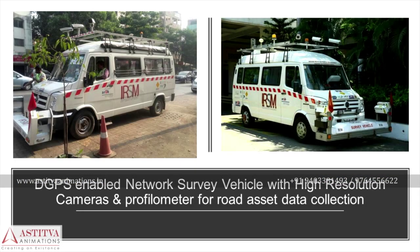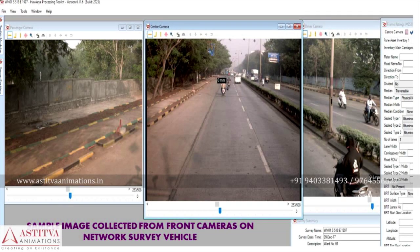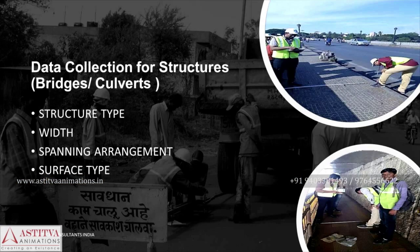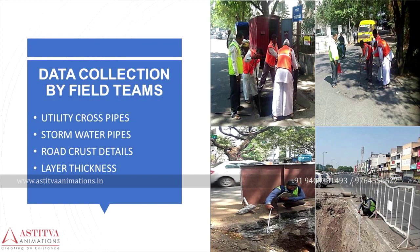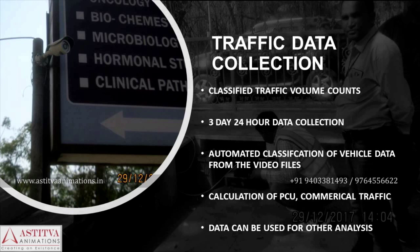A differential GPS-enabled vehicle called the Network Survey Vehicle, equipped with four high-resolution cameras and profilometers, is used. Geo-referenced high-resolution photos are collected by front cameras at every 10-metre interval, and road surface images are collected by rear cameras. Photos are analyzed using software to digitize road asset data. Parameters not captured by the NSV are collected by field teams using traditional measurement methods and GPS-enabled tablets. Traffic data is collected by mounting video cameras at mid-block locations for 24-hour counts over three days.